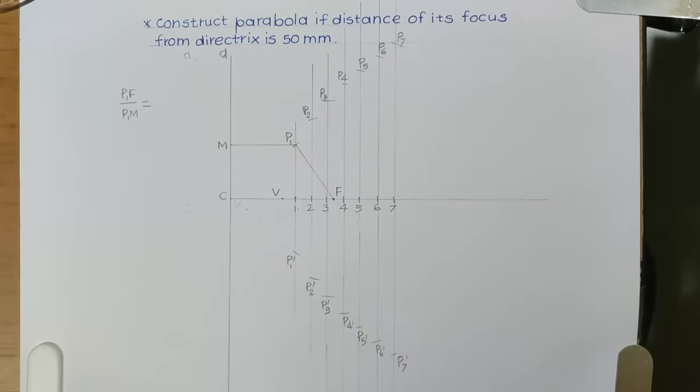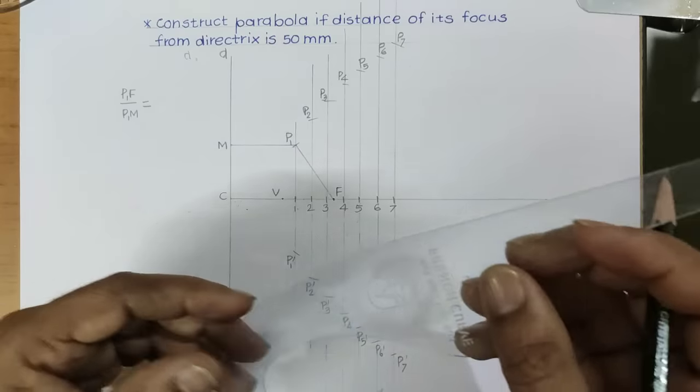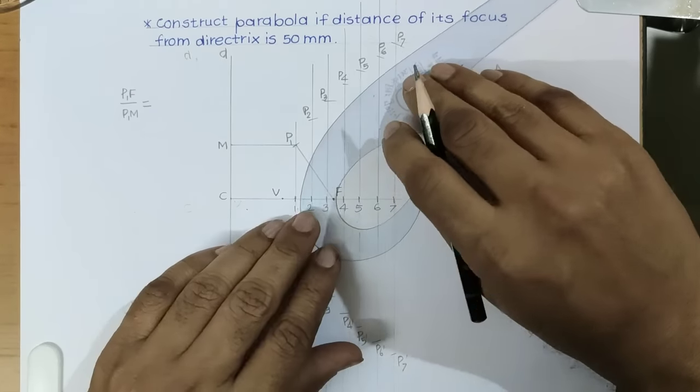Then, draw a smooth curve passing through all these points. You can draw it freehand if you are habitual to it. Otherwise, you can use French curve for drawing the curve.